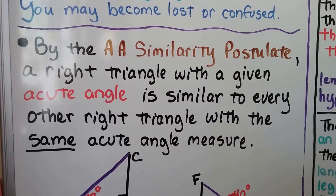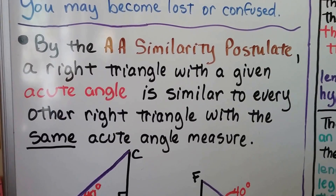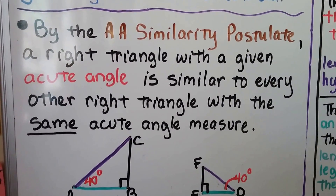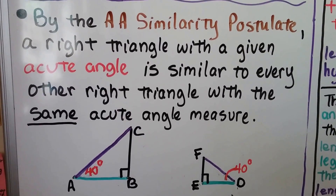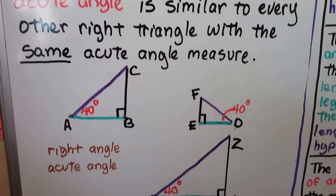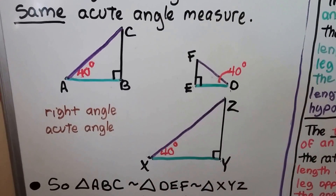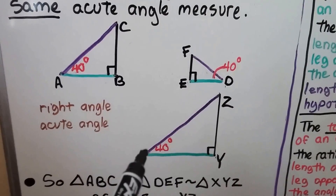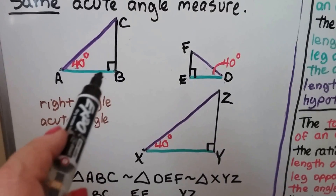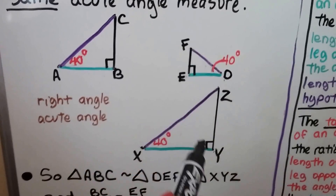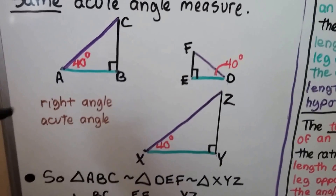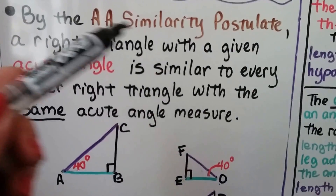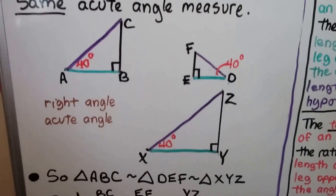By the AA similarity postulate — that's angle-angle similarity — a right triangle with a given acute angle is similar to every other right triangle with the same acute angle measure. Here we have three right triangles, and they all have a 40-degree acute angle. They also all have a right angle. Because they have a right angle in common and an acute angle in common, that's angle-angle similarity. They're all similar to each other.